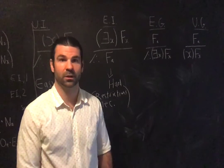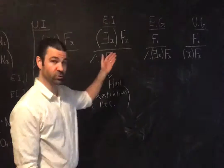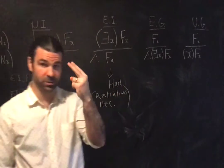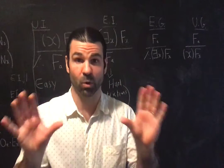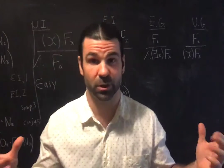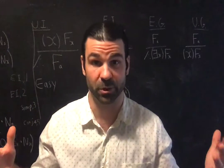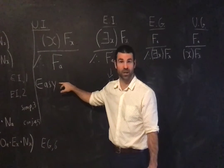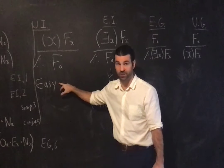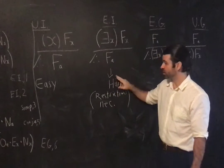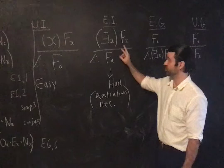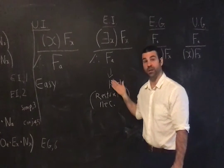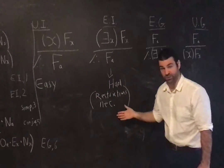Unit 15, part 3. What about existential generalisation? We've been through these two rules, and deriving from their names what they allow us to do, according to the preliminary statement of them, we determined that this one is not going to require any restrictions on its use, because it will never lead us astray, while existential instantiation will require restrictions on its use.